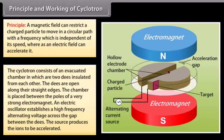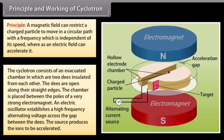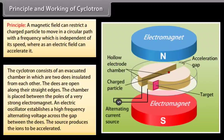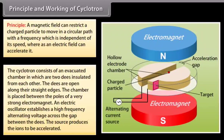The cyclotron consists of an evacuated chamber in which there are two D's insulated from each other. The D's are open along their straight edges. The chamber is placed between the poles of a very strong electromagnet. An electric oscillator establishes a high frequency alternating voltage across the gap between the D's. Suppose an ion with positive charge Q and mass M is at the centre of the gap when D1 is at negative potential with respect to D2.